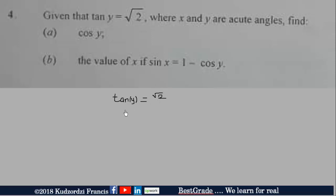Now recall that we can rewrite √2 as √2 over 1. And also note that the tangent ratio is equal to the opposite side, the length of the opposite side, over the adjacent side. So meaning that the opposite side is √2 and the adjacent side to the angle y is 1.